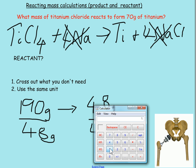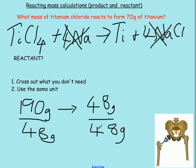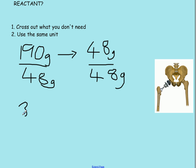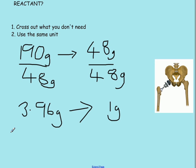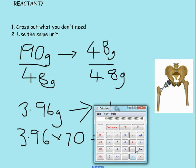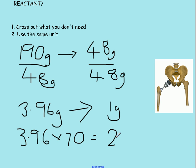Lob that in the calculator. 190 divided by 48 equals 3.96. Should we go for 3.96? So that is 3.96 grams makes 1 gram. Right, now we've got to say how much it makes 70 grams. So if we times it by 70, times 70 equals, 277.1.